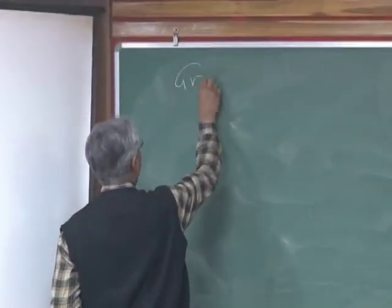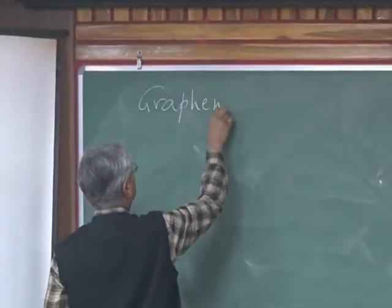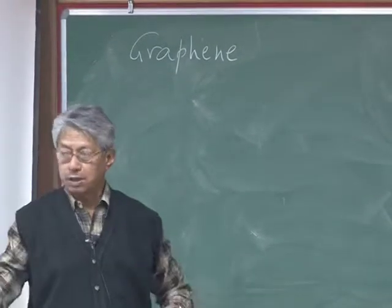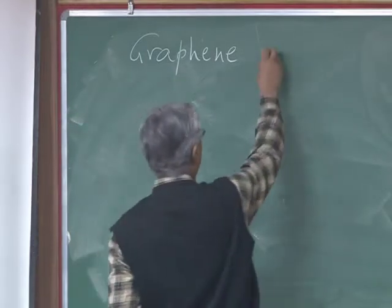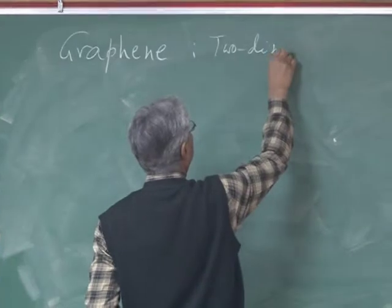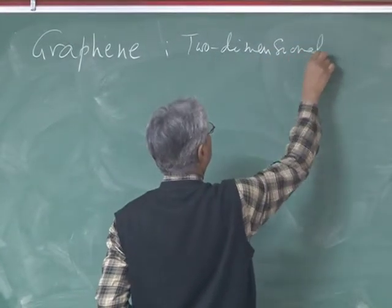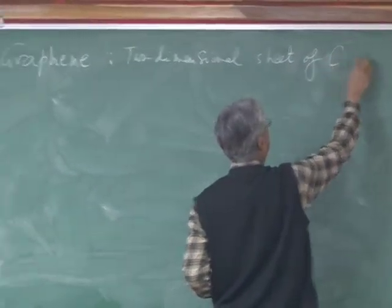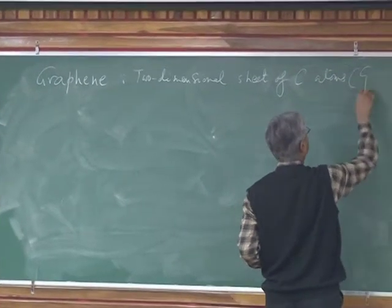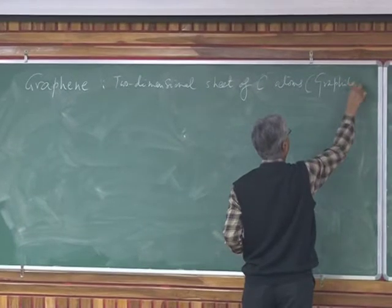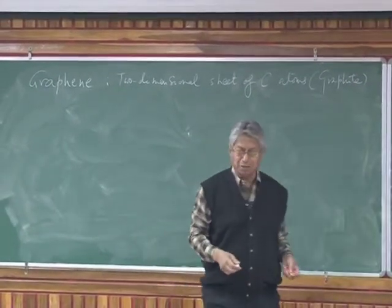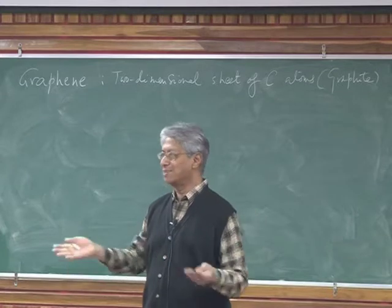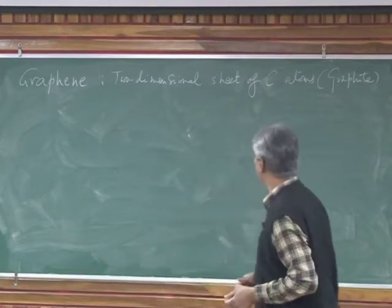Graphene is going to occupy our focus for both lectures before lunch. It's a two-dimensional sheet of carbon atoms, so-called graphite. There seems to be a division between physicists and chemists — physicists call it graphene while chemists call it graphite, at least in the books, but languages are getting mixed up now.